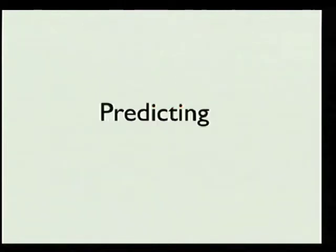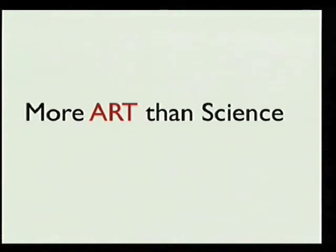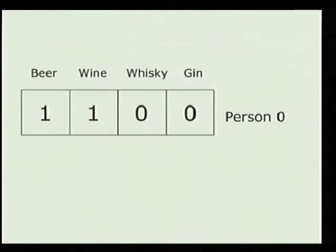Everybody wants to write the next great prediction engine — Netflix is going to give you 10 million bucks if you can improve theirs. Predicting is more art than science in many ways, because it requires building a model around the interactions of the people actually looking at your data. The literature is almost always written for someone with a PhD or postdoc in mathematics. So we're going to take another step, lie to you about it, and tell you the basics. This is pretty much how almost every single prediction engine works — we start with something called a feature vector.